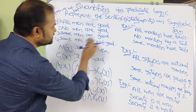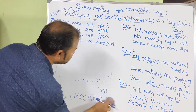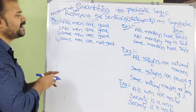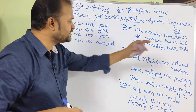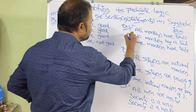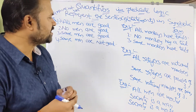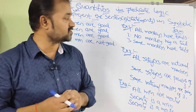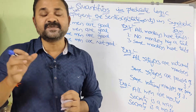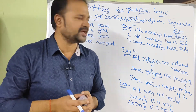Now let us see the second example, which has three sentences: All monkeys have tails. No monkey has a tail. Some monkeys have tails. The words all, no, and some are quantifier keywords. Monkey and tail are the predicates, and we represent them with proposition or statement functions.